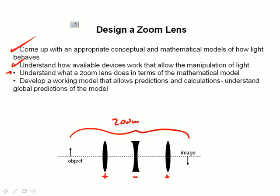And so let's start to look, in a very qualitative and conceptual way, how light behaves in a system of lenses. Because we need to have more than one lens if we're going to make a zoom lens.